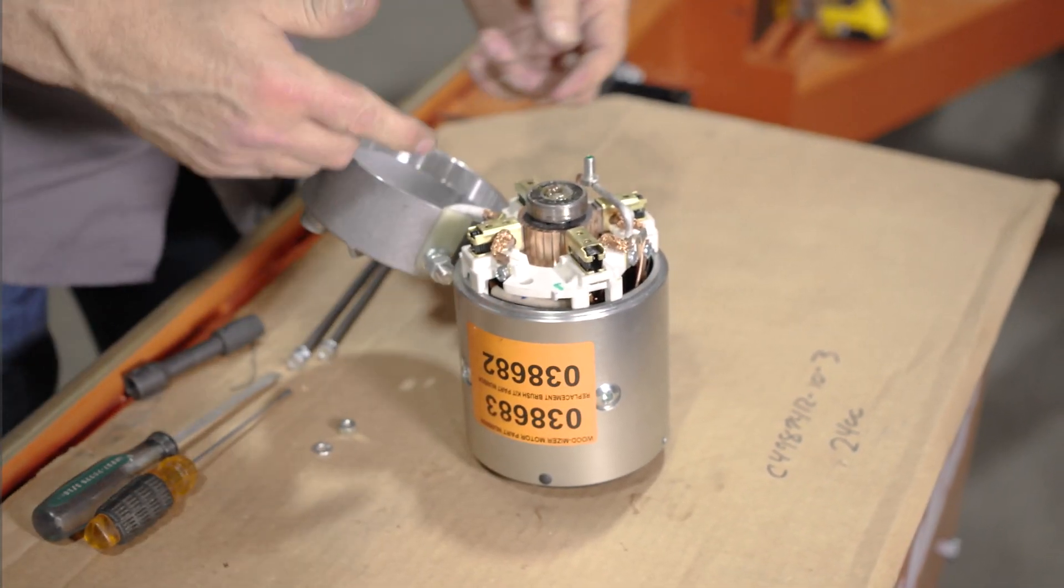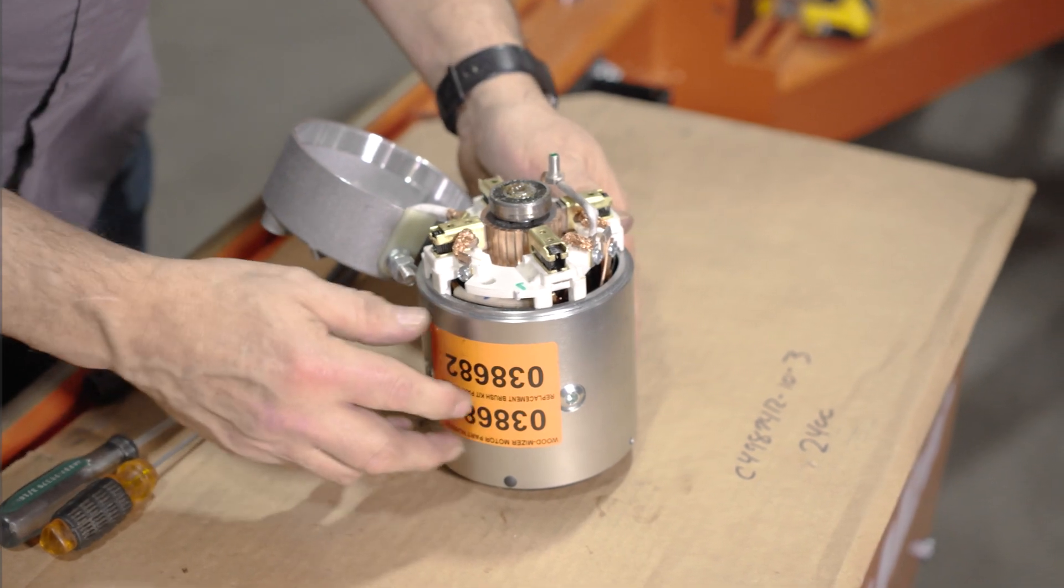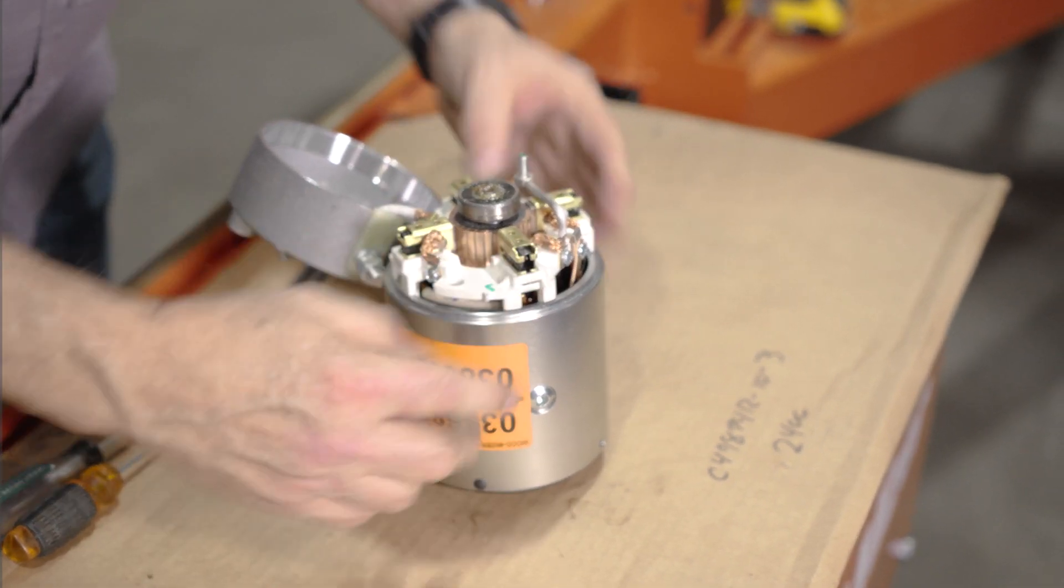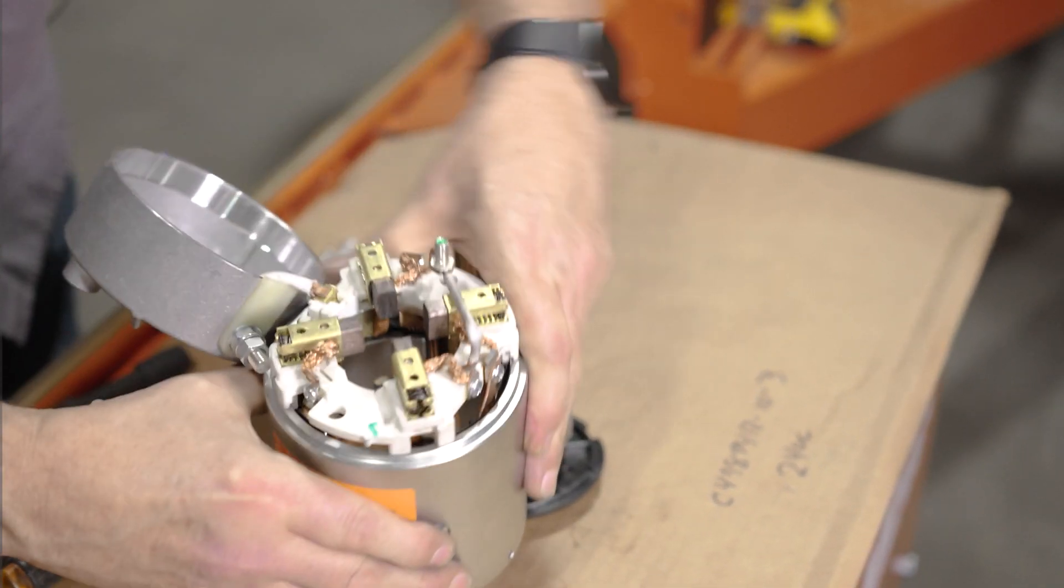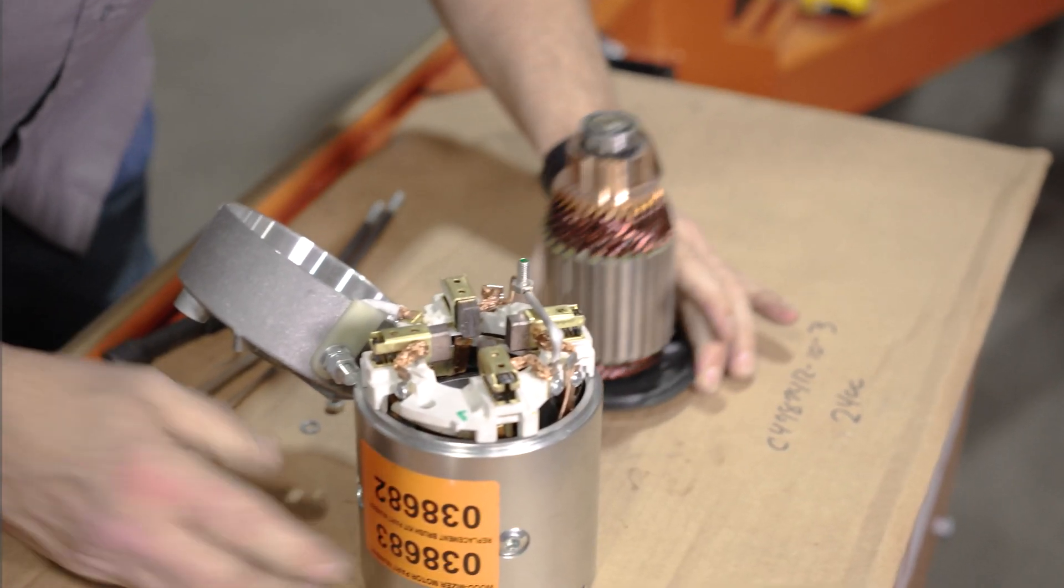Now you can see all four of our brushes, how they all come in from four different angles. As we lift up the motor casing, we can take it off of the armature.